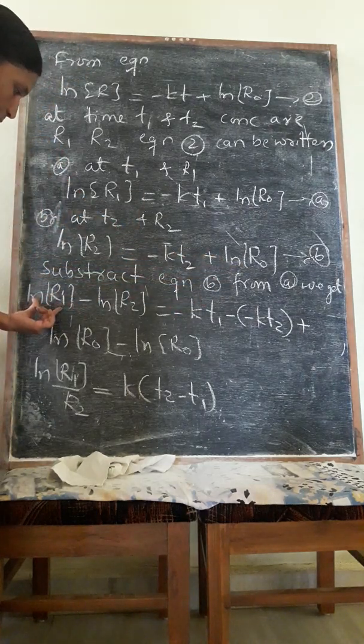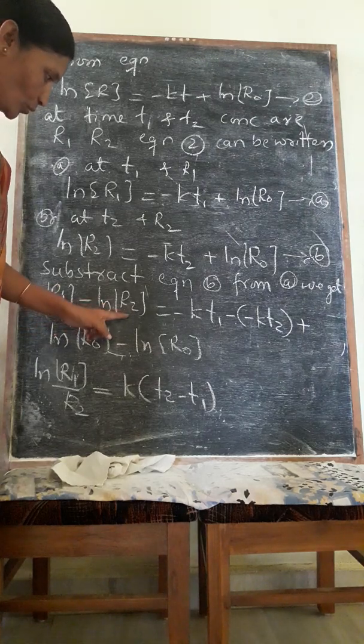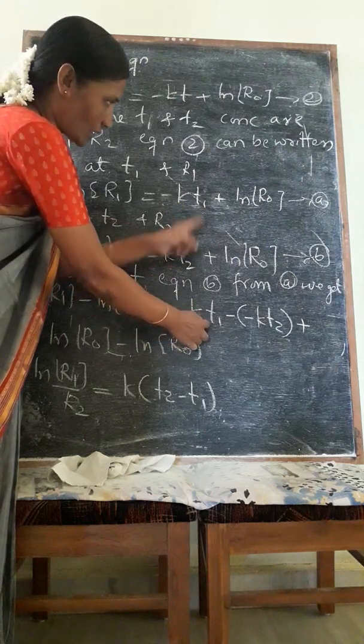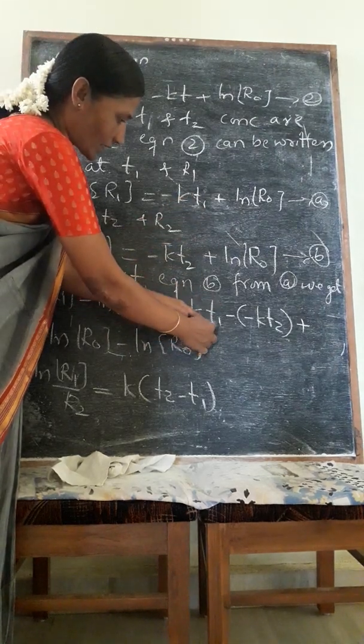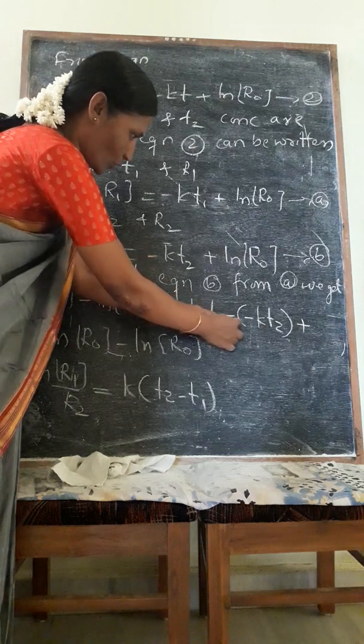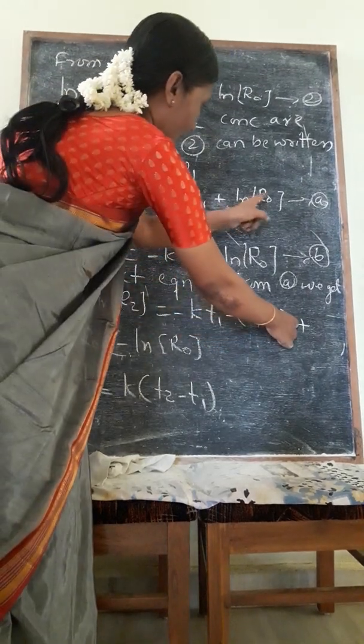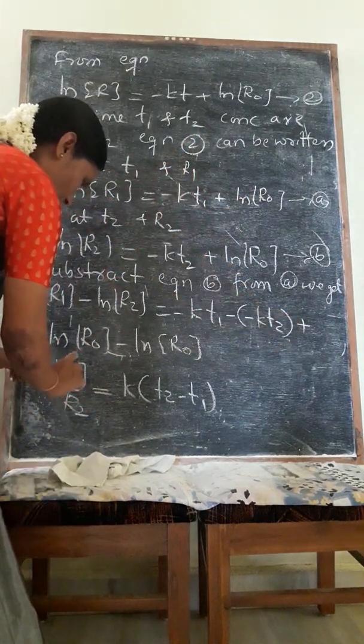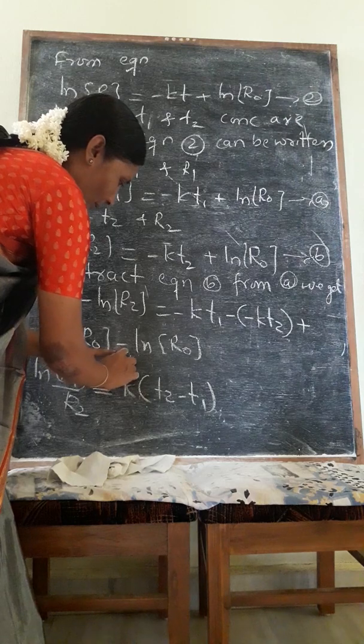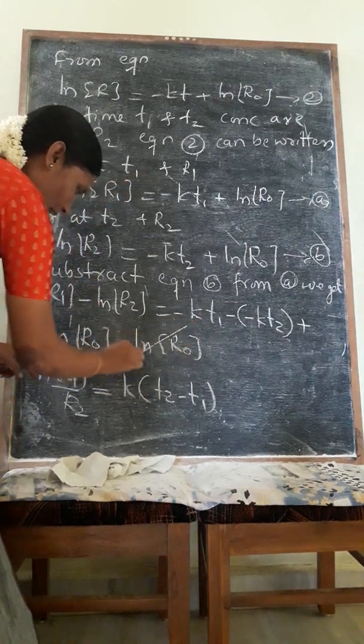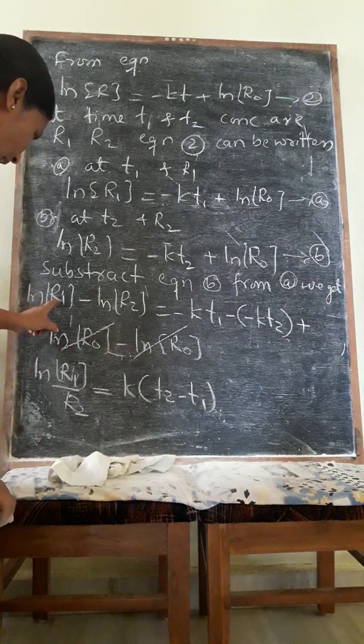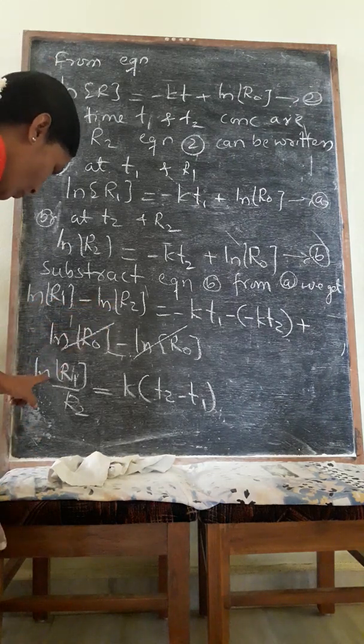We get ln R1 minus ln R2 equals minus kT1. Subtract equation B. Ln R0, ln R0 get cancelled.